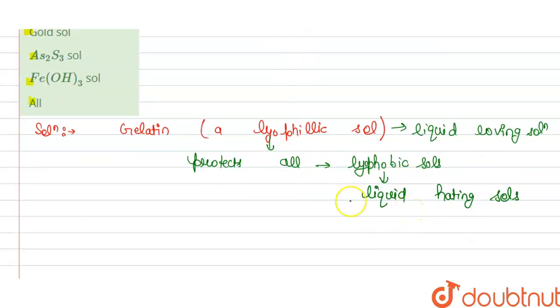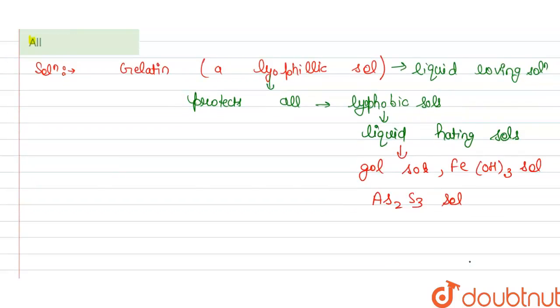And we have the lyophobic sols are hydroxide, gold sol, ferric hydroxide that is Fe(OH)3, Fe(OH)3 sol and As2S3 sol. So all these are lyophobic sols.